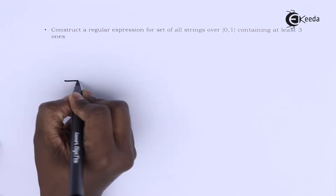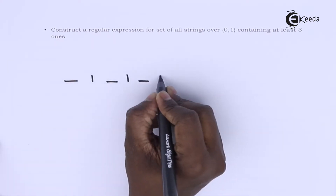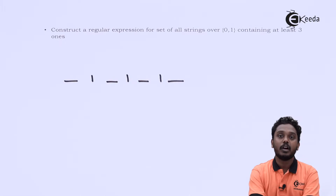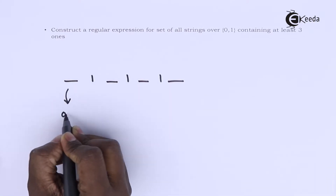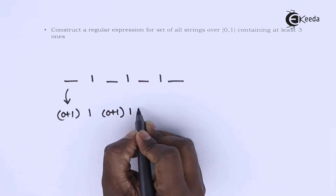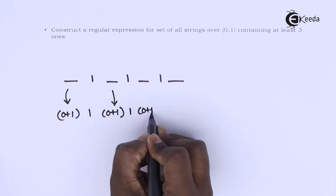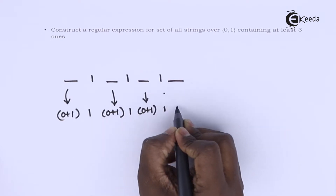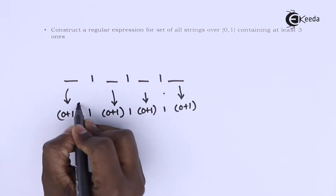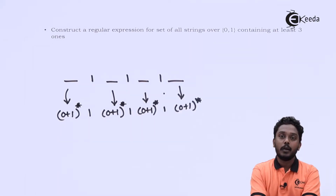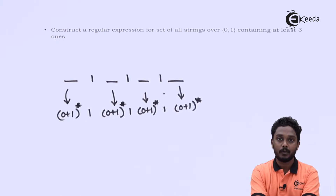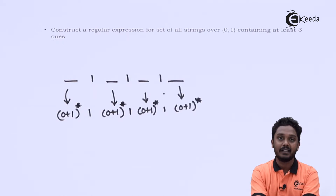I have drawn 3 ones. Covering these 3 ones, I can have any number of 0s and 1s in the space positions. The required regular expression is (0+1)* followed by 1, again (0+1)* followed by 1, again (0+1)* followed by 1, followed by (0+1)*. Any string generated by this regular expression would contain at least 3 ones in it.